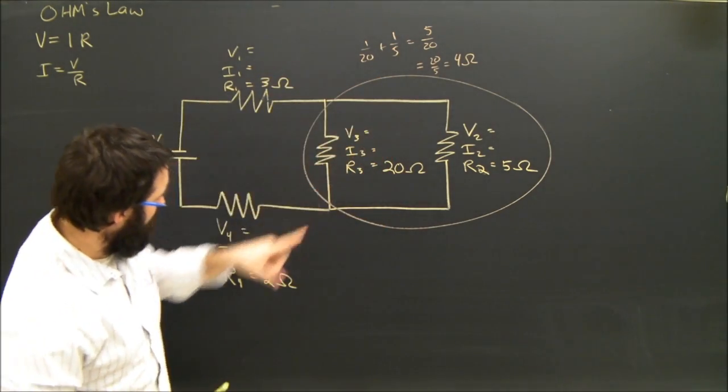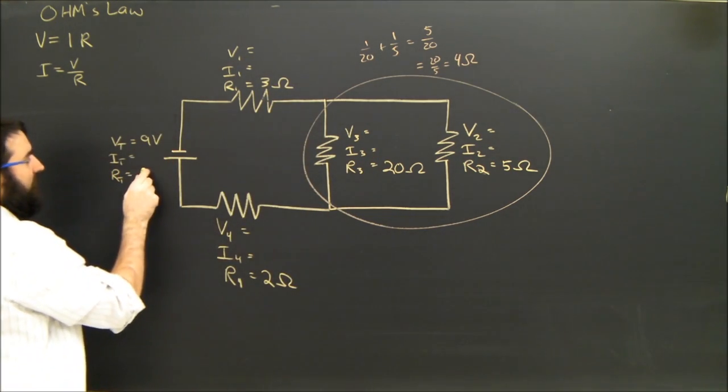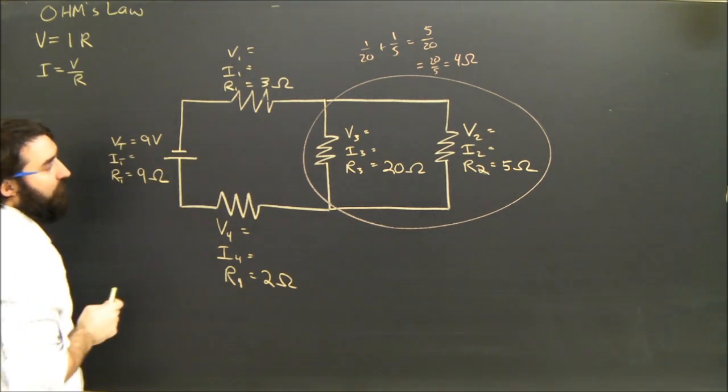This guy has 3, 4, 2. They're all in series. 3 plus 4 is 7 plus 2 is 9. So my total resistance is 9 Ohms.